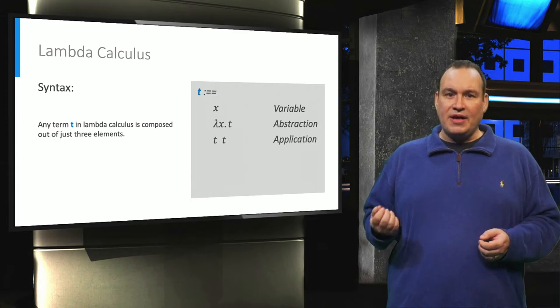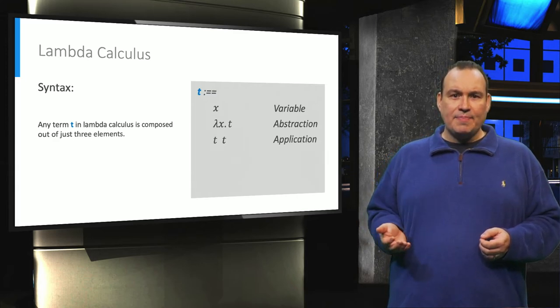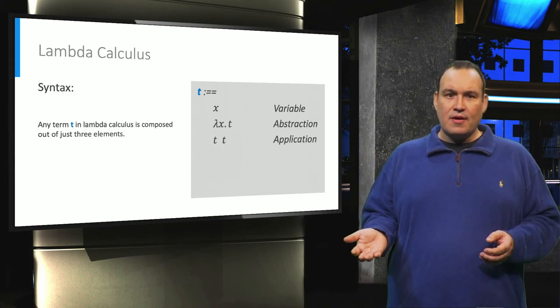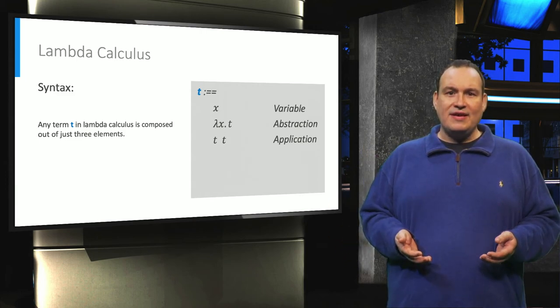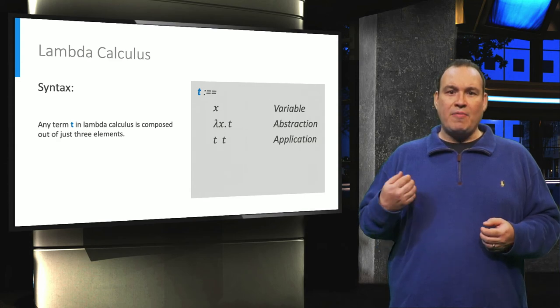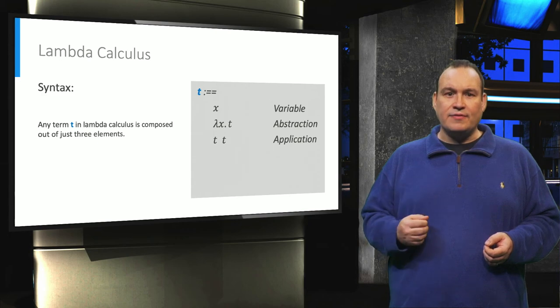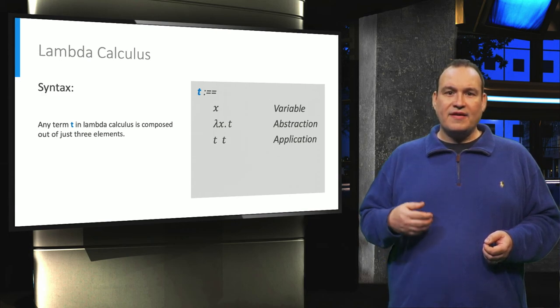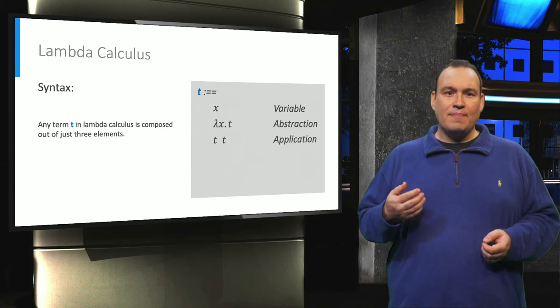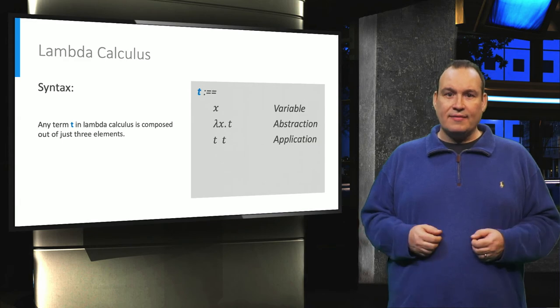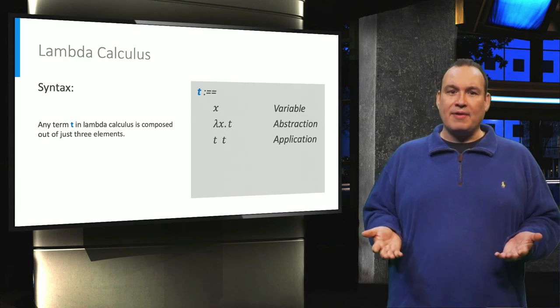The final element is application. This might seem a bit odd to you, but by writing one term next to the other, we mean that the first term T on the left is in the shape of a function, and the second term on the right is what we want this function to be applied to. This particular notation requires a bit of practice to get used to, which we will do. But for now, this is it. This is all that is Lambda Calculus.